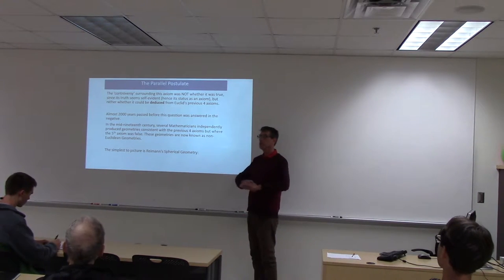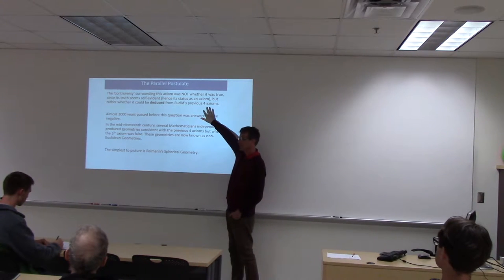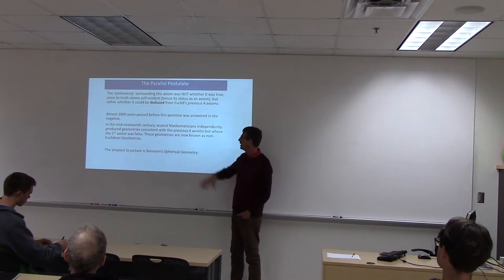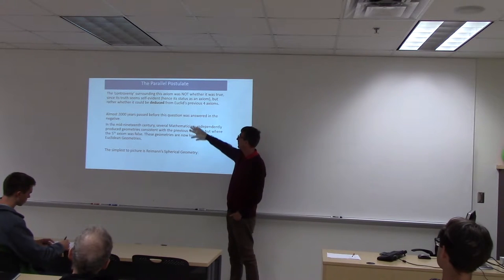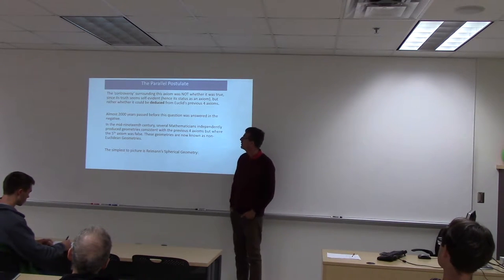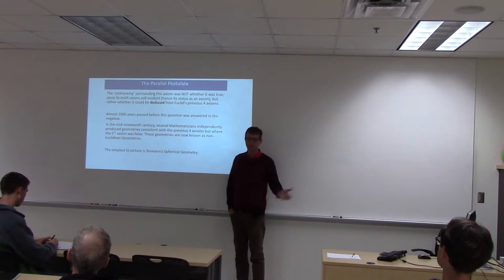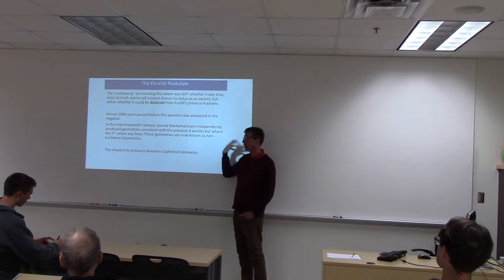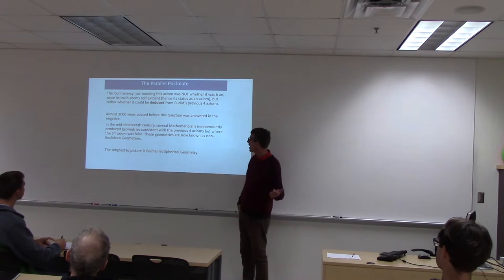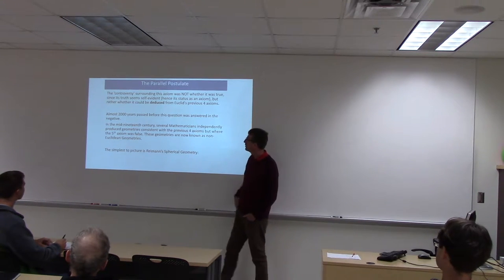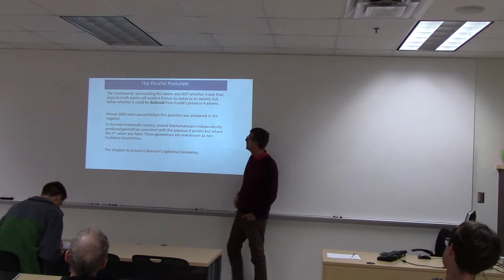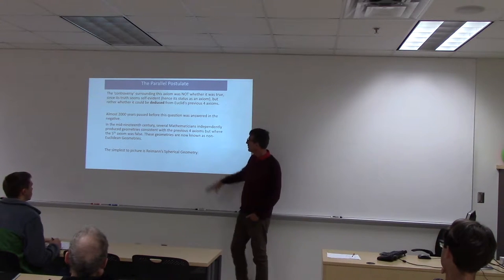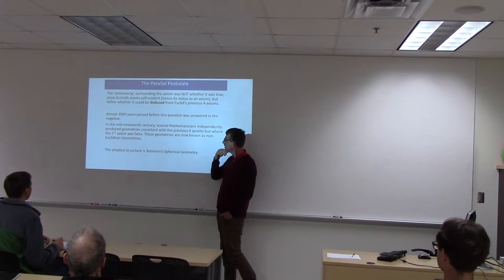The controversy surrounding this axiom was not whether it was true, because its truth by that picture seems self-evident. The question was whether it could be deduced from the previous four axioms. And literally the history of geometry is full of erroneous proofs trying to show falsely that the fifth axiom can actually be deduced from the previous four. But then in the mid-19th century, several mathematicians almost simultaneously, Gauss, Bolyai, Lobachevsky, independently produced geometries consistent with the previous four axioms but where the fifth axiom was false.